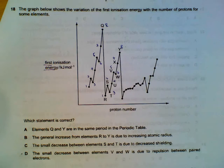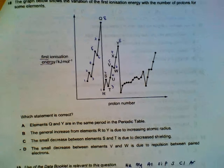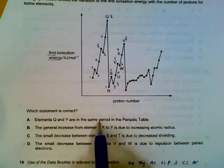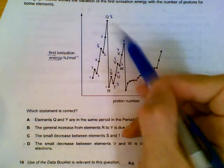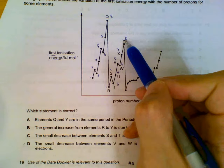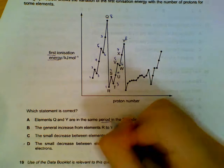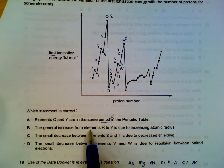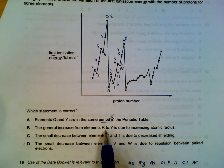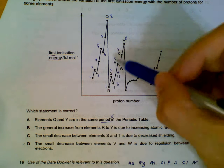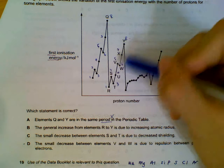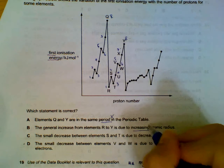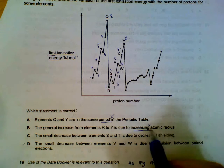From there we can check the other options: Q and Y are in the same period — actually Q and Y are in different periods but the same group. The increase from R to Y is due to decreasing atomic radius, making it harder to remove electrons.